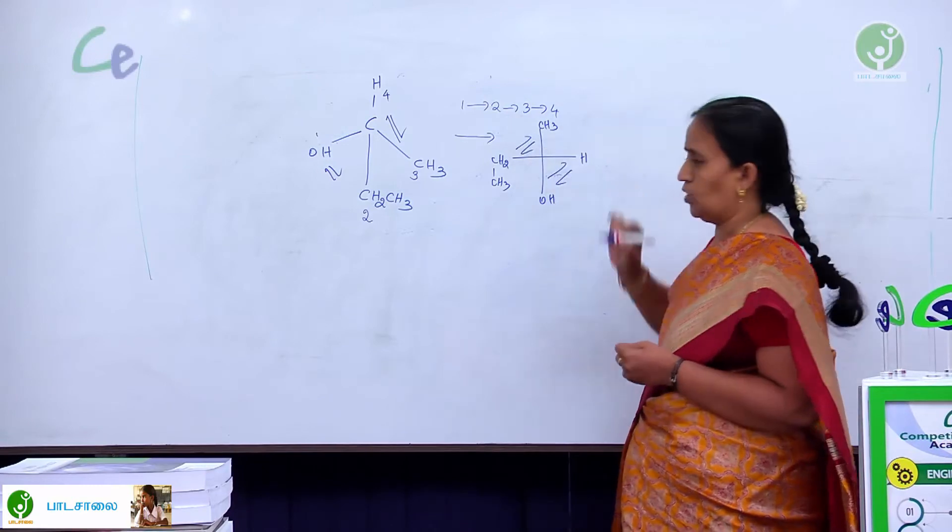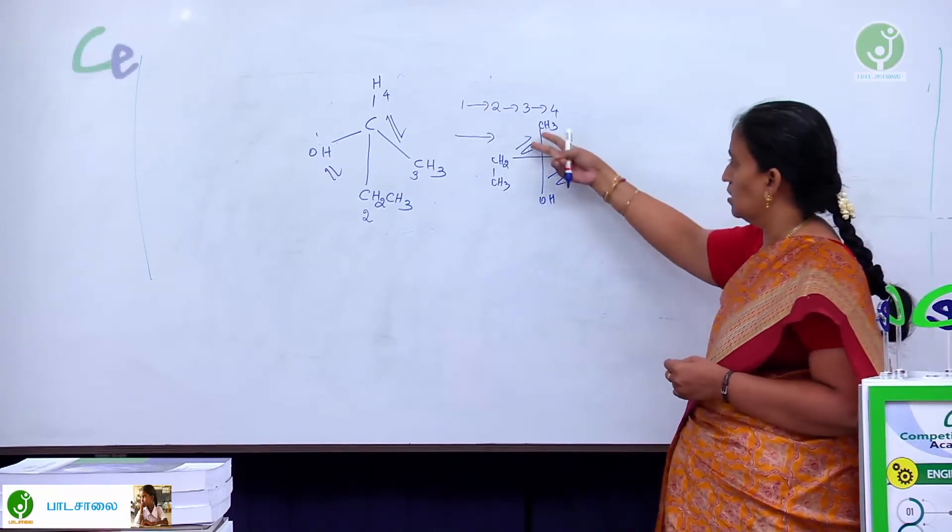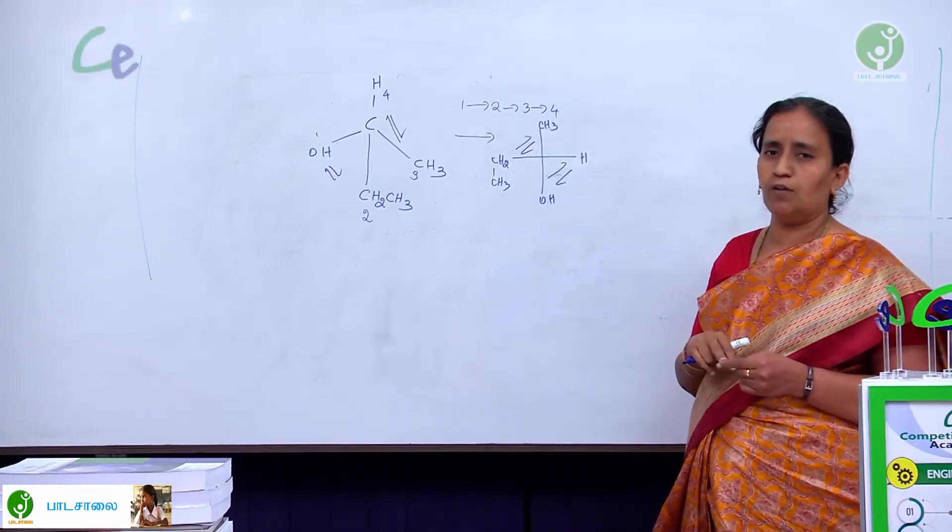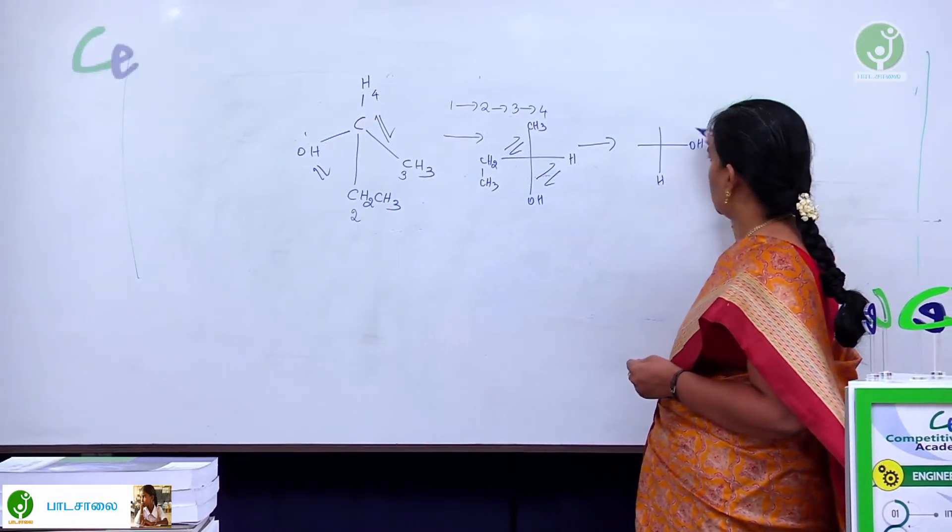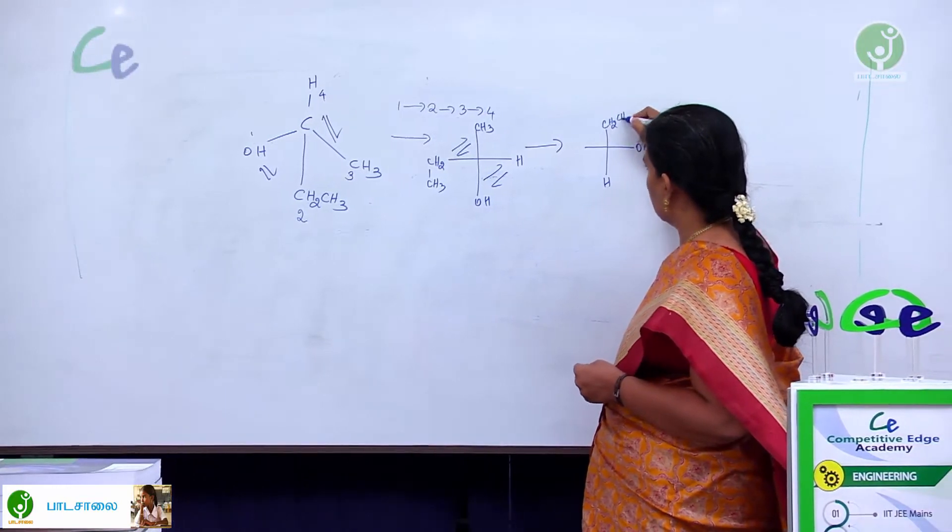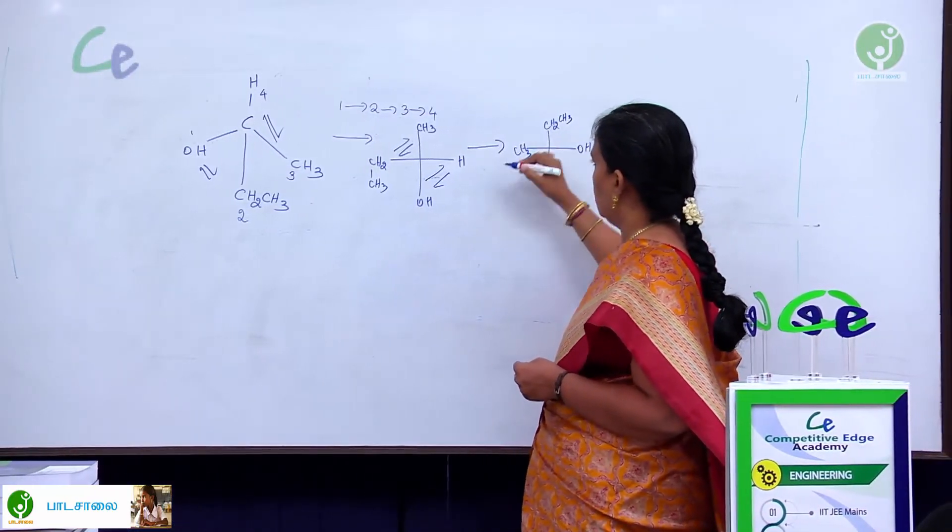Do one more time the rotation. When I am flipping this, automatically opposite side also, I have to flip. Now, what will happen? It will come hydrogen here, OH here, CH2CH3. Ethyl group comes here, methyl group.